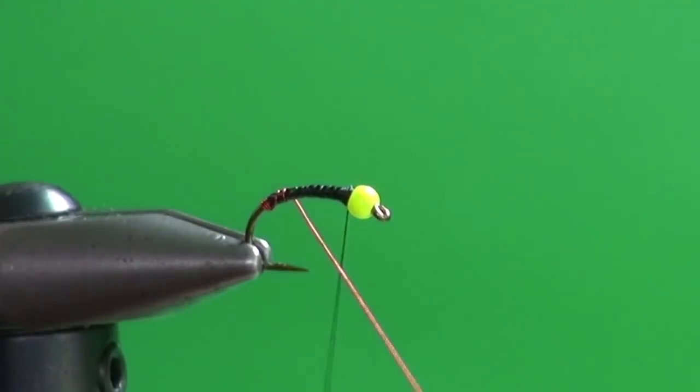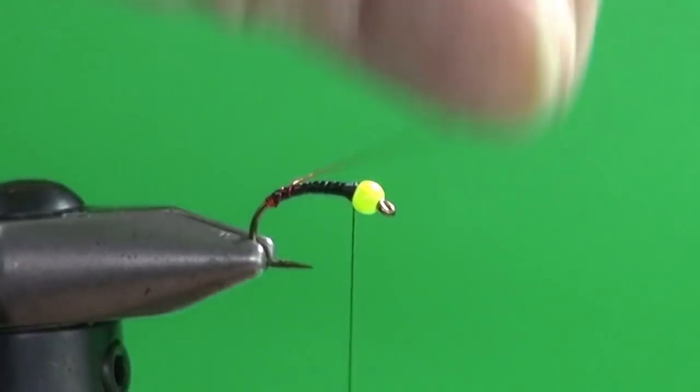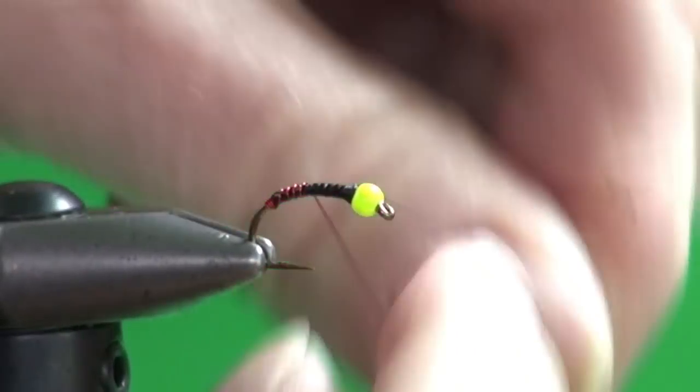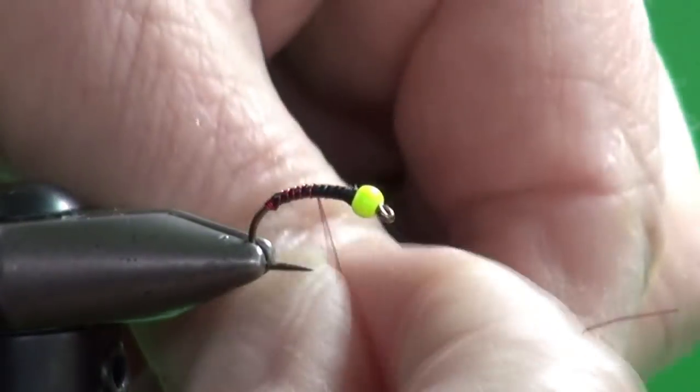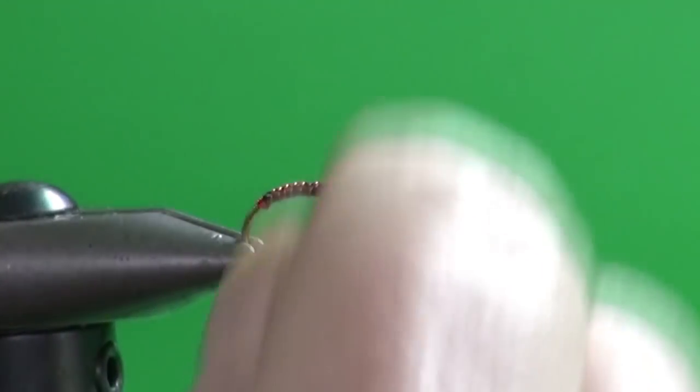And then I'm just going to come forward now and open that spacing up to rib the fly. And the target is always to get seven ribs for nine body segments. So there's two, three, four, five, six, seven.